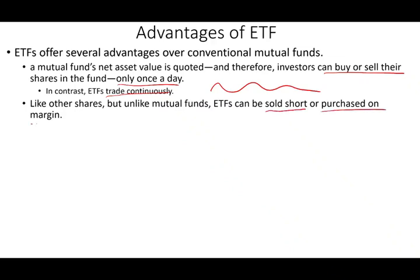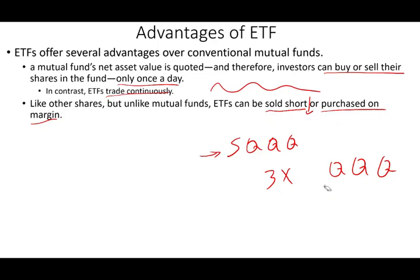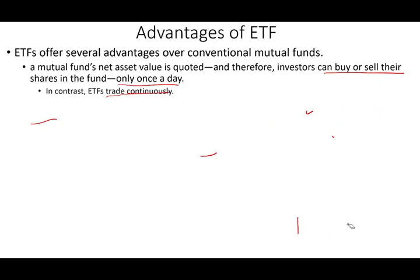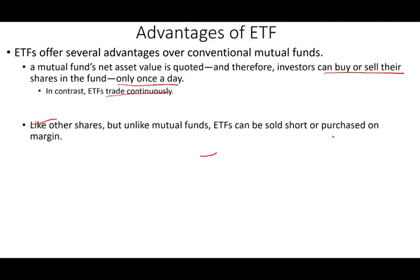Unlike mutual funds, ETFs can be sold short or purchased on margin. If you want to buy more and don't have the money, you can borrow to buy ETFs. If you think the technology sector is going down, you can short that sector ETF. There are also triple leverage ETFs and inverse ETFs. For example, SQQQ is inverse three times the QQQ — if the NASDAQ 100 goes up, SQQQ goes down three times, and if the NASDAQ 100 goes down 1%, SQQQ goes up 3%. There's also TQQQ, which is triple but goes positively with QQQ.